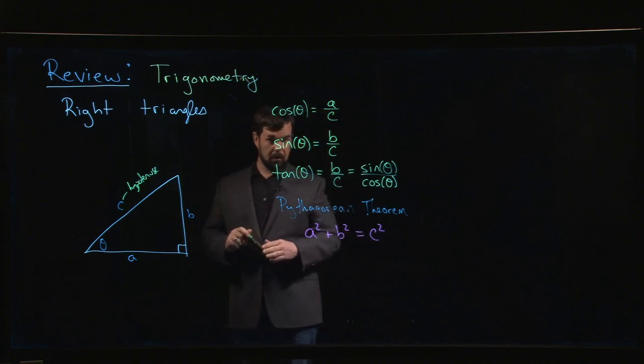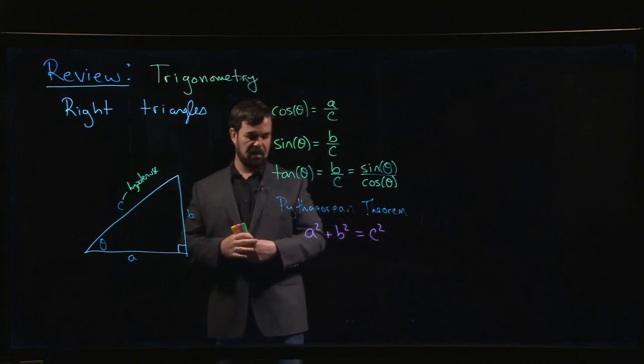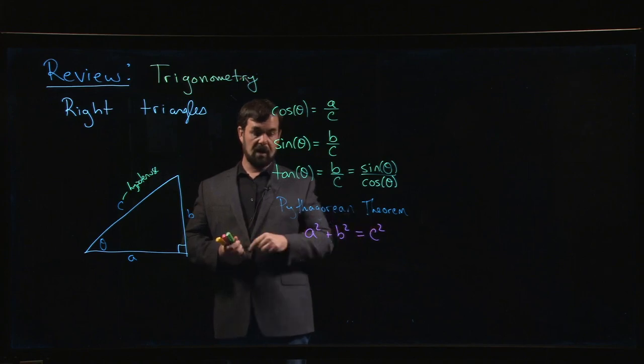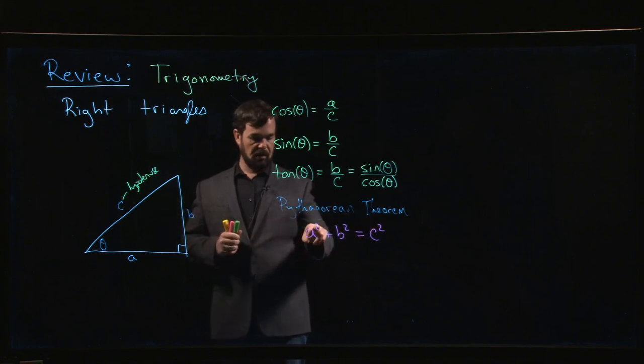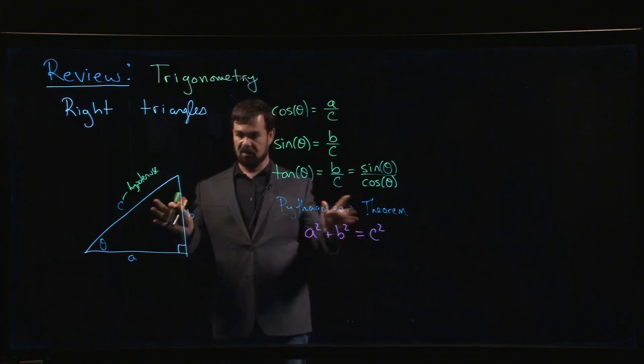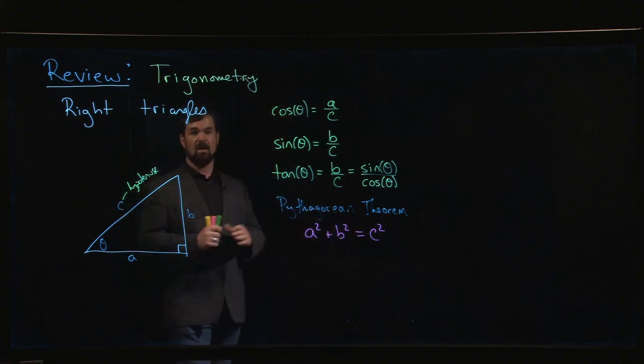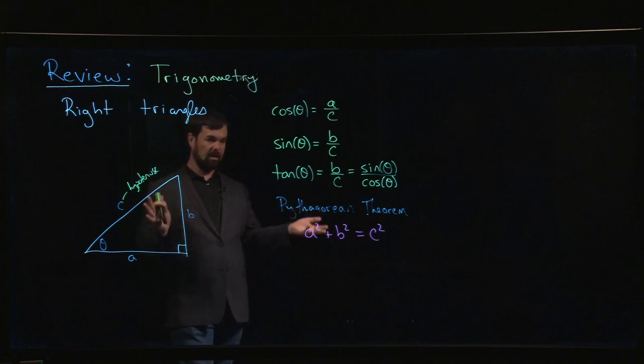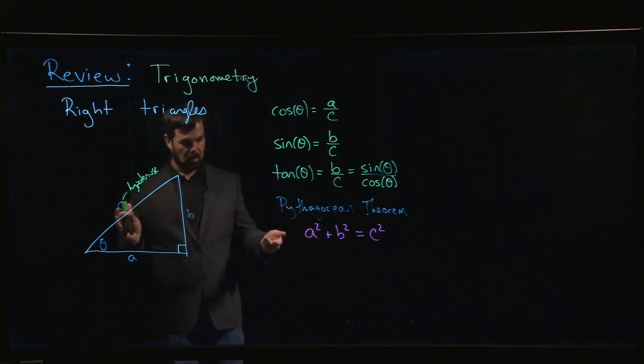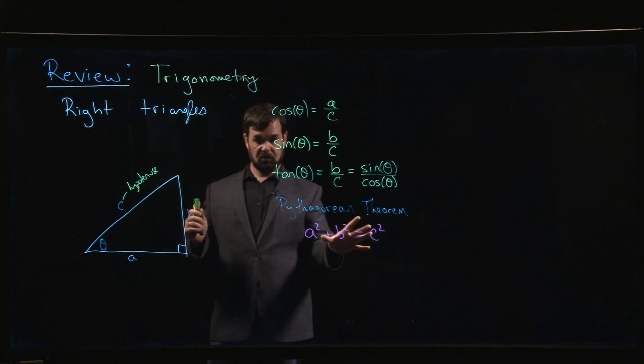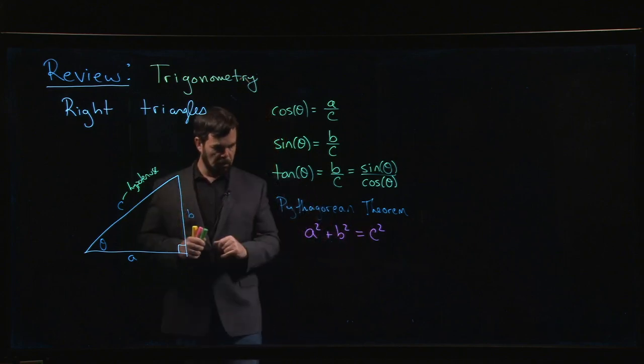Some of you may have heard of Fermat's theorem, which says that if you go for any higher integer powers here, cubes or greater, it's impossible to find integer solutions to this equation. So something special about the second power. Pythagorean theorem, there are lots of examples of these triples of integers that fit the equation, which is interesting.